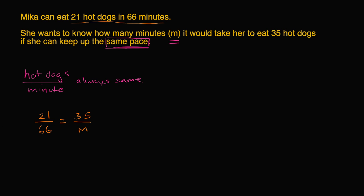Let me do that in a different color. So I multiply that side by M and this side by M. On the left-hand side we have 21 over 66 times M, which is equal to — well, you divide by M and multiply by M, those cancel out — and you're just going to have 35.